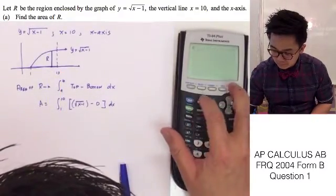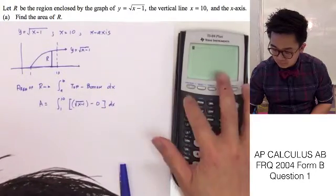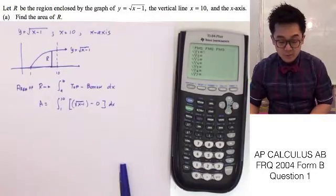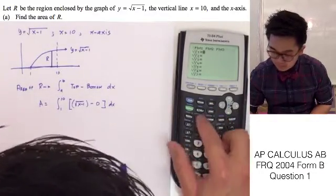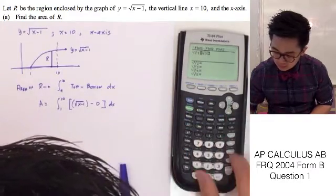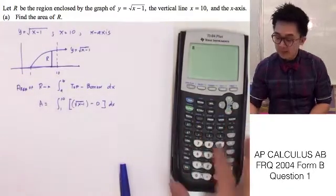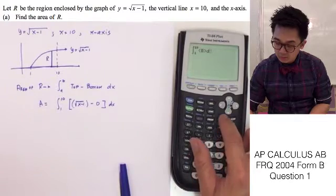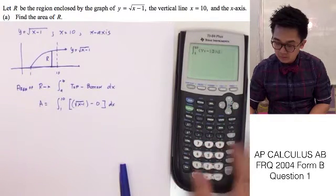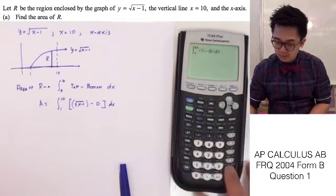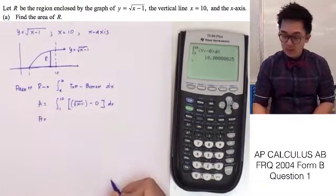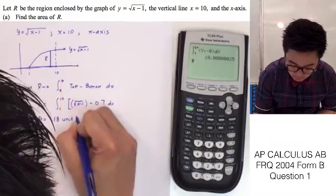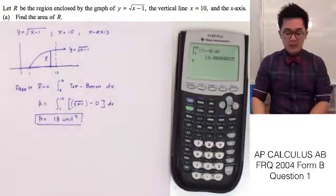So we have the area equal to the integral from 1 to 10 of square root of x minus 1 minus 0, dx. Using our calculator, we plug in square root of x minus 1 to Y1, and use Math 9 from 1 to 10 for the integral of Y1. The area of the function is 18.000, so 18 unit squared. This is problem letter A.